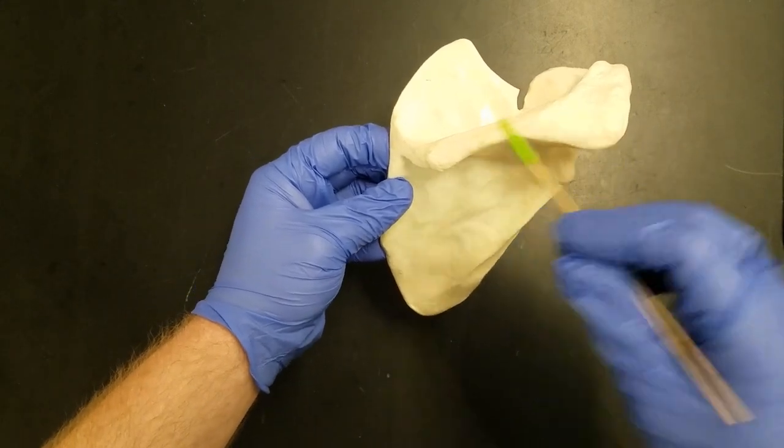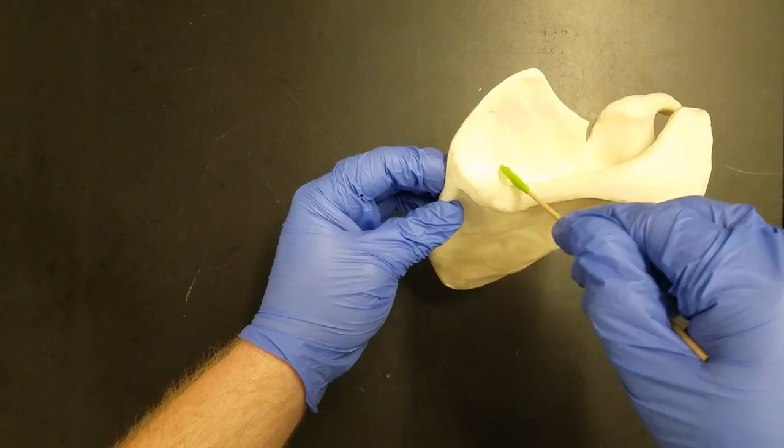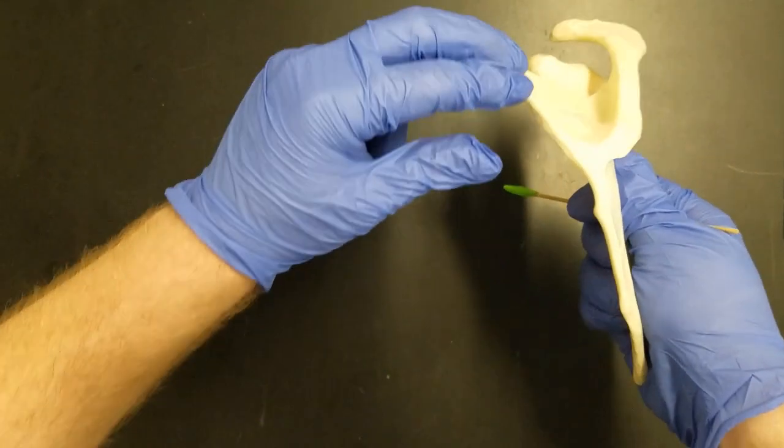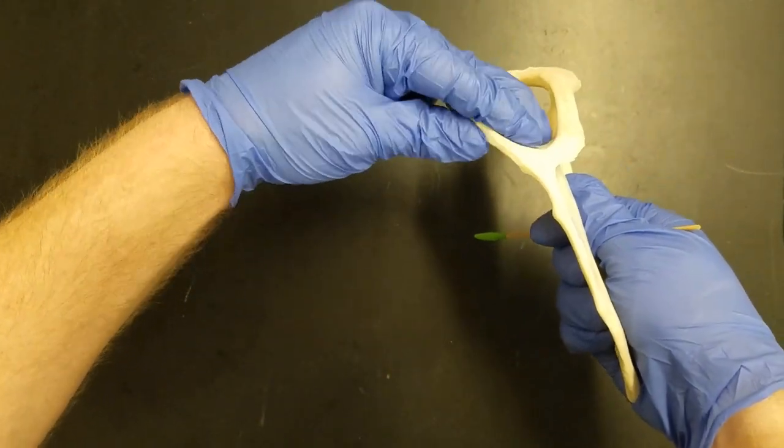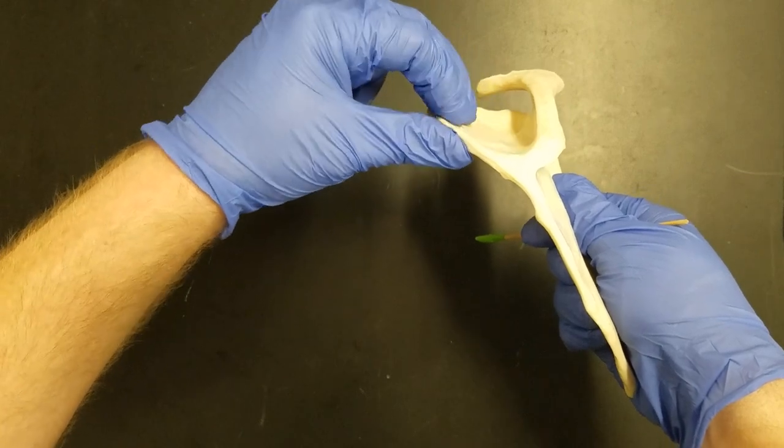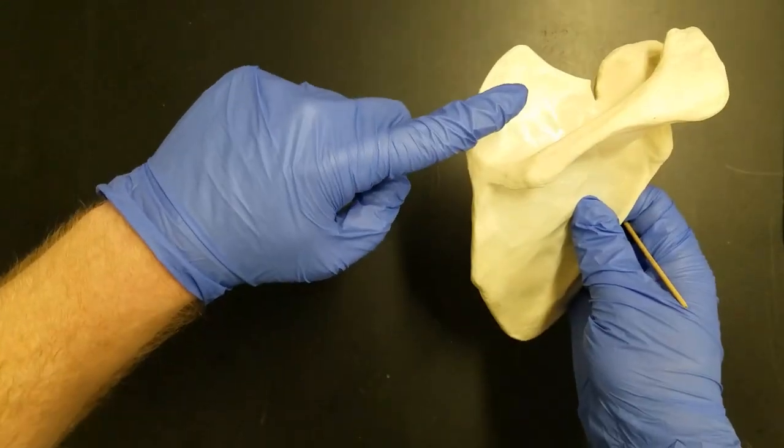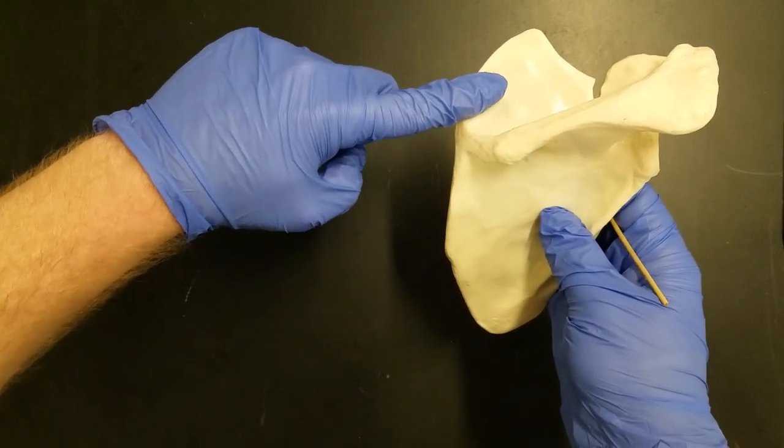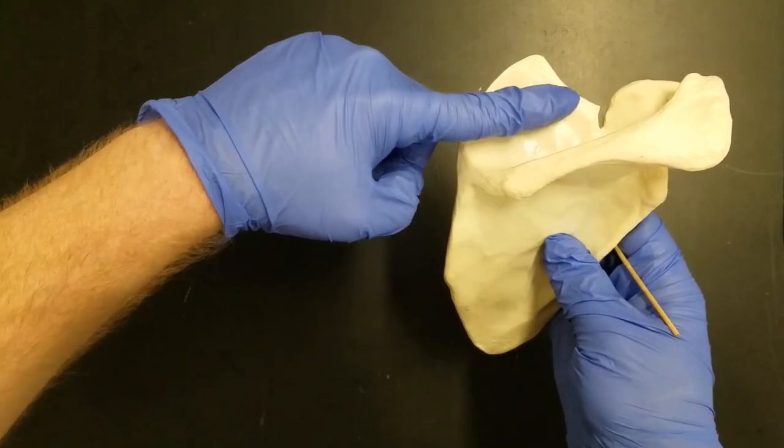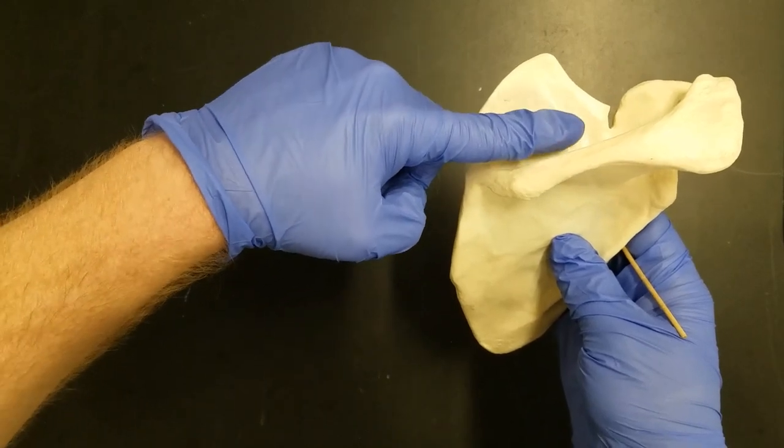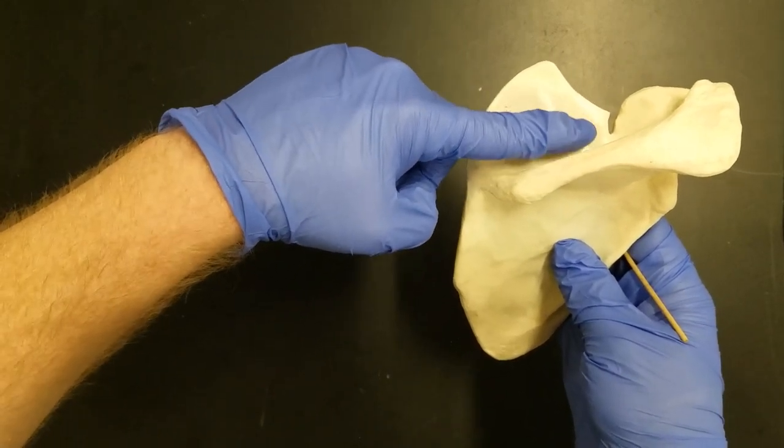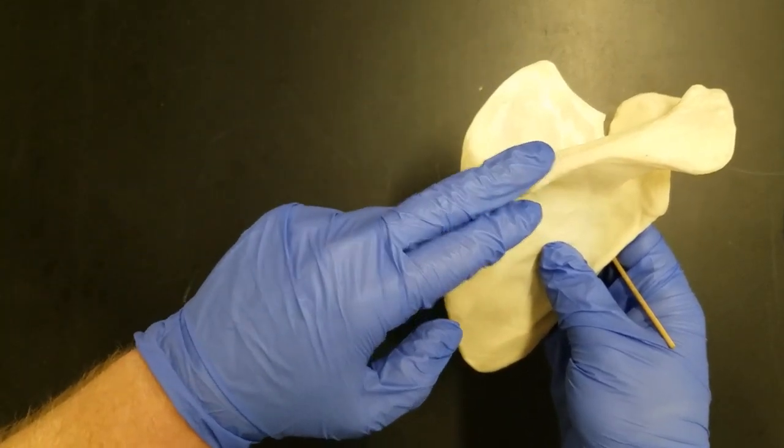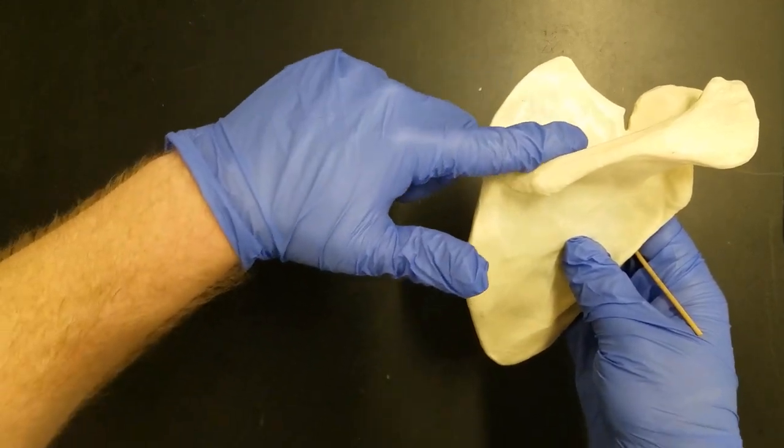Above the spine of the scapula, we have this depressed area. You can see how my fingers slide into it. It's kind of like a little basin or depression. Since this depression sits above the spine, it's superior to the spine, we're going to call it the supraspinous fossa. Supra means above, spinous refers to the spine, and fossa means depression.